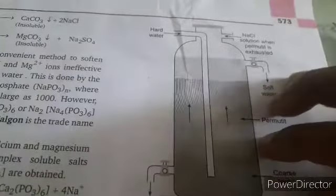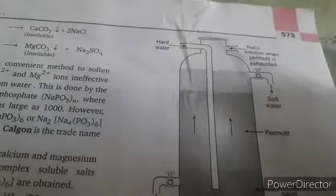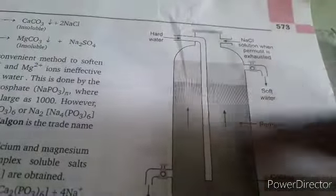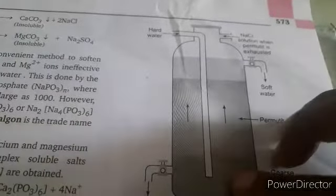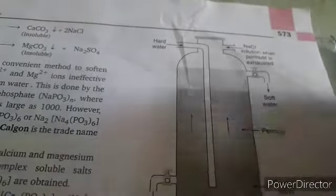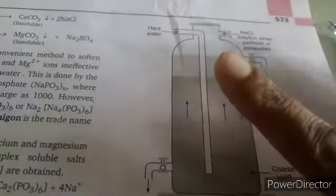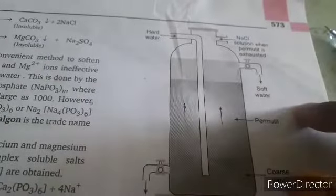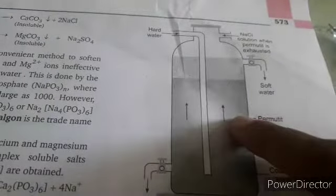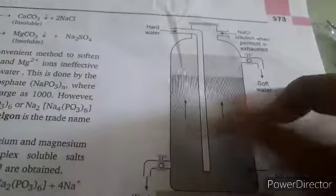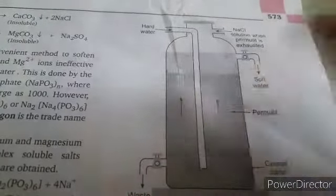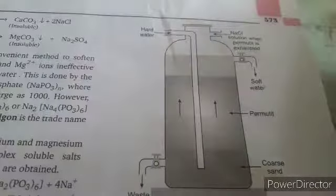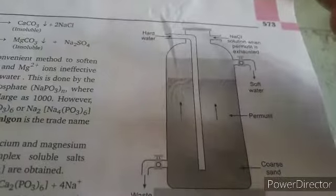After 12 hours, the permutite becomes saturated and can no longer be used. To regenerate it, NaCl is added. The sodium ions from NaCl replace the calcium and magnesium ions absorbed by the zeolite, converting it back to sodium zeolite. Once regenerated, it can be reused again for the softening process.